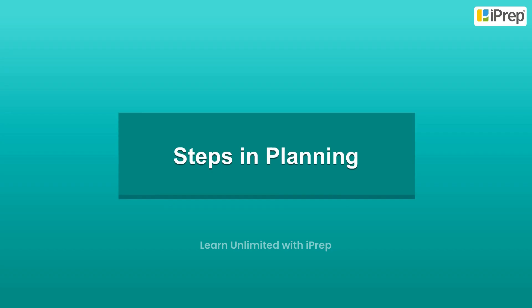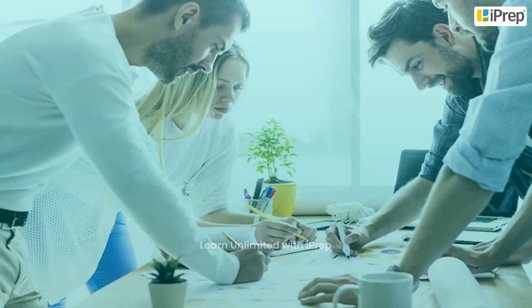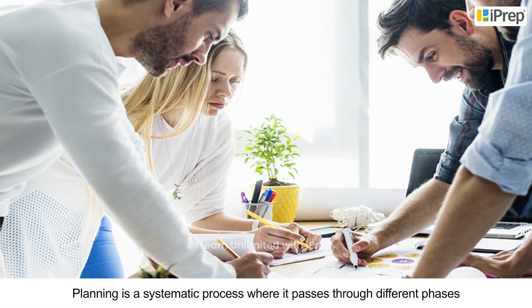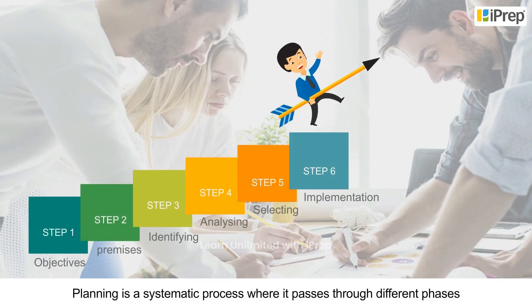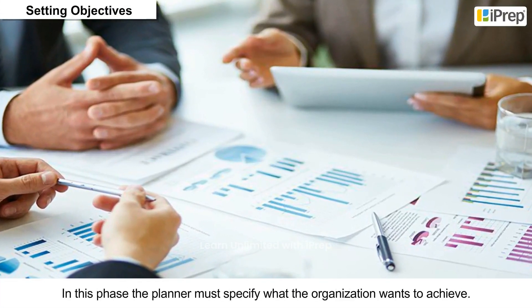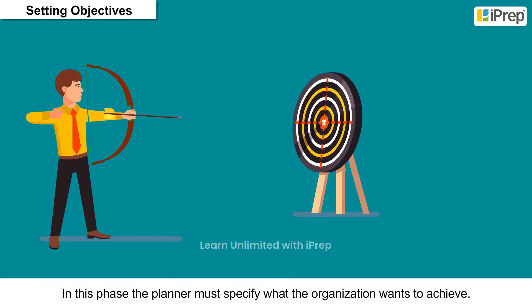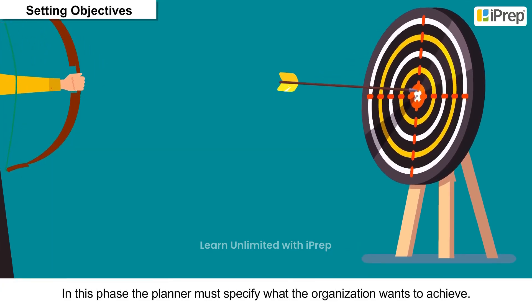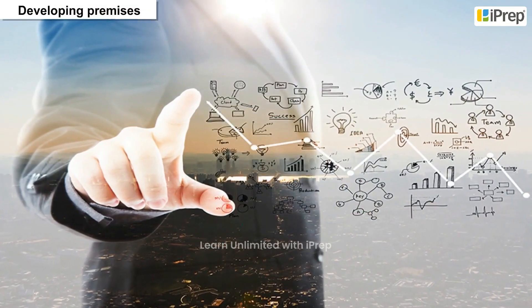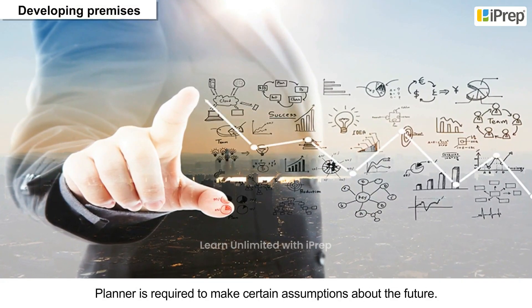Steps in planning: Planning is a systematic process where it passes through different phases, discussed below. Setting objectives: In this phase, the planner must specify what the organization wants to achieve.